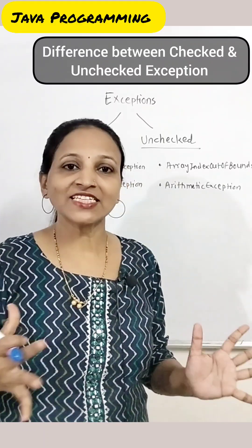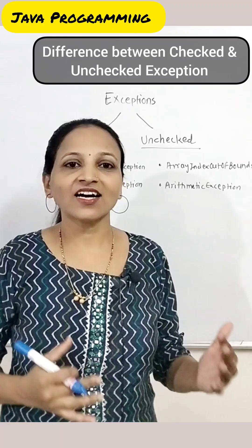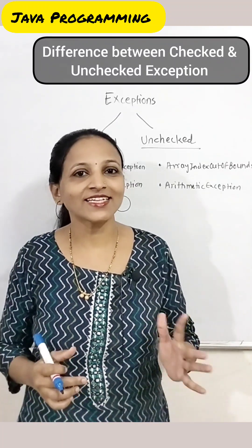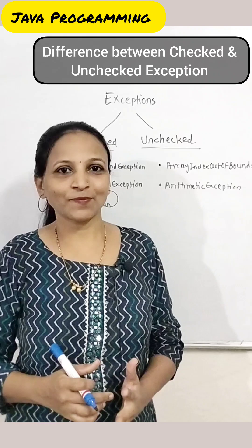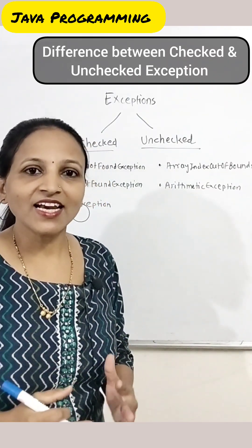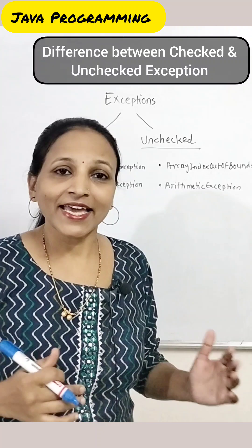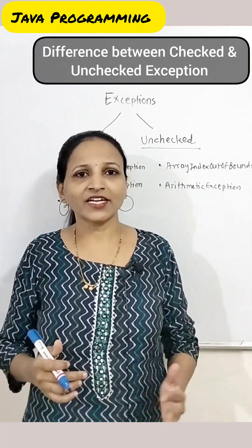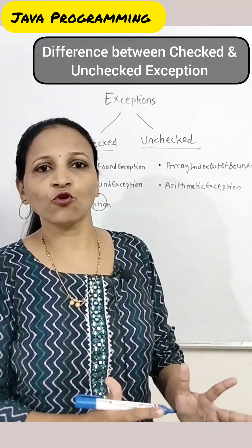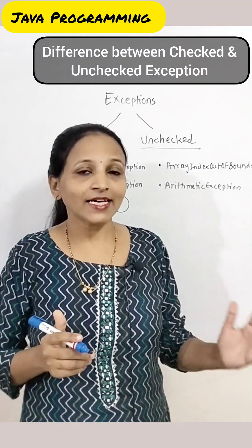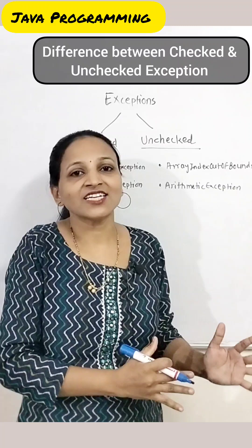Hello students, what is the difference between checked and unchecked exceptions in Java? Exceptions are unwanted or unexpected events that occur at runtime and interrupt the normal flow of your program execution. Exception is a derived class of the Throwable class, which is part of the java.lang package. There are basically two types of exceptions: checked exceptions and unchecked exceptions.